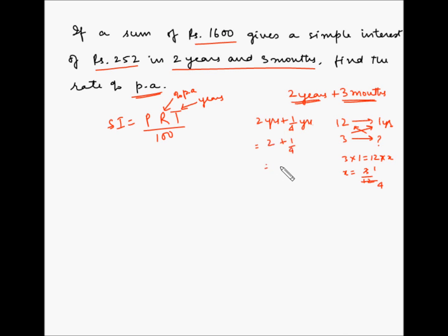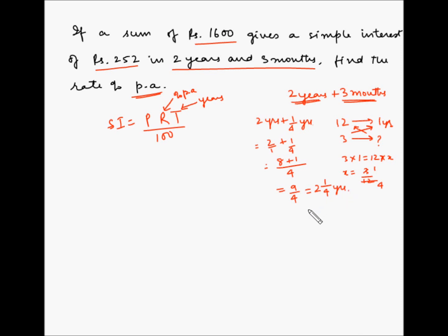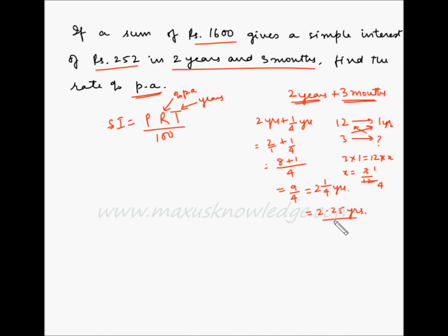So the total time is two years plus 1/4 year, which is 2 + 1/4. Taking 4 as the LCM: (8 + 1)/4 = 9/4 years. In other terms, this can also be expressed as the mixed number 2 and 1/4, or as 2.25 years, since 1/4 = 0.25 and 2 + 0.25 = 2.25 years.